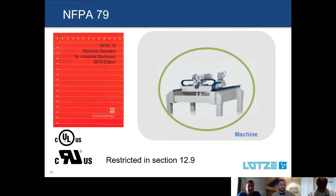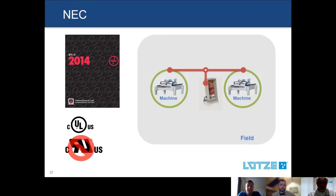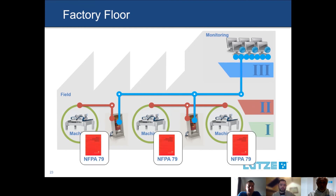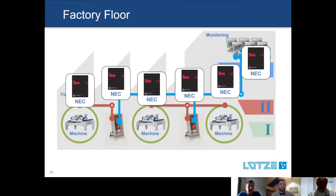In summary: NFPA 79 covers the wiring of the machine — Section 12 defines what is required. UL 508A covers wiring inside the control cabinet — a small element of the overall 508A requirements, but it is important that the right wire is used in construction. Finally, the National Electric Code dictates cabling from machine to machine or control panel to machine when running through a building. Looking at a typical factory floor, the machines are covered by NFPA 79, the control cabinets by UL 508A, and the building wiring by the NEC.